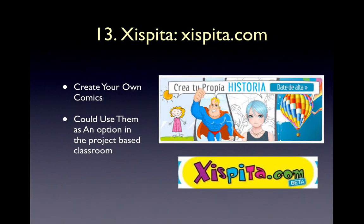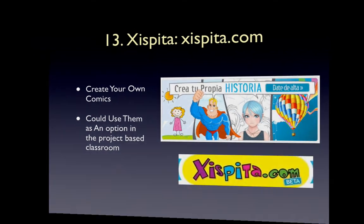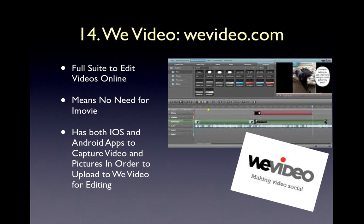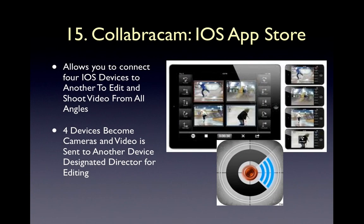Number thirteen is XPita. XPita allows you to create your own comics. Some students are very into comics, and this would be a way for them to tell a story and do project-based storytelling. Number fourteen is WeVideo. WeVideo is a full online video editing suite — similar to Ujam in that you don't need the iLife suite anymore. It means you don't need iMovie or Windows Movie Maker, and it doesn't matter what computer you have. It also has both an iOS and Android app to capture video and pictures to upload and then edit on WeVideo. Number fifteen is CollaborateCam. CollaborateCam allows you to connect four iOS devices to another device so you can edit and shoot video from all angles — four devices act as cameras and one device acts as director, editing the footage together into a video.